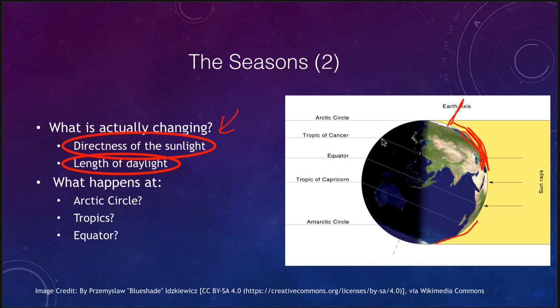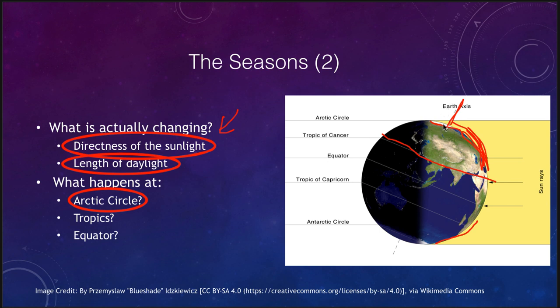Up in the north, more of the earth is in sunlight, so there is a longer time that that portion of the earth will spend in sunlight. If you get far enough north, the entire circle will be in sunlight and the sun would never set. That's what we define as the Arctic Circle — the furthest southerly portion where the sun will never set on at least one day of the year. If you are at the Arctic Circle or further north, there will be days where the sun never sets and remains above the horizon all day and all night long.